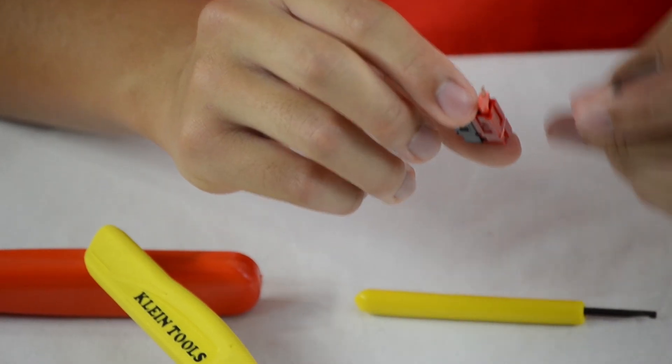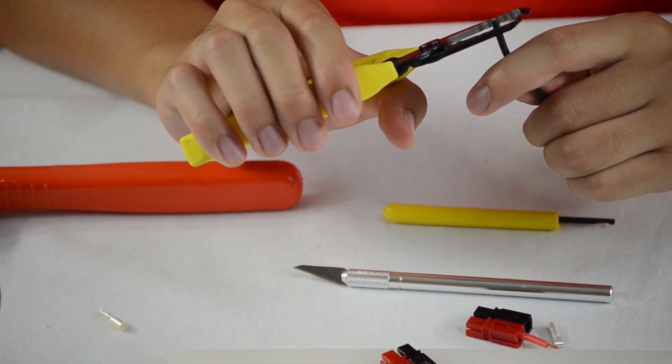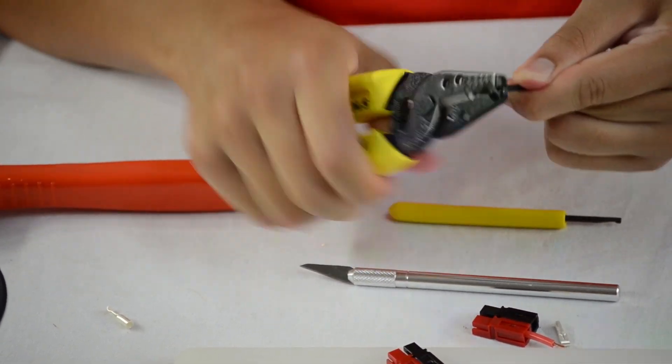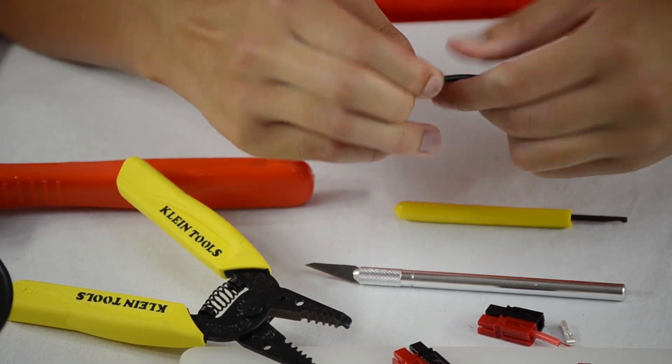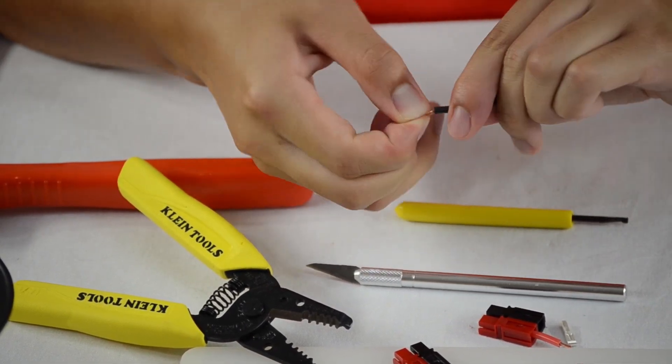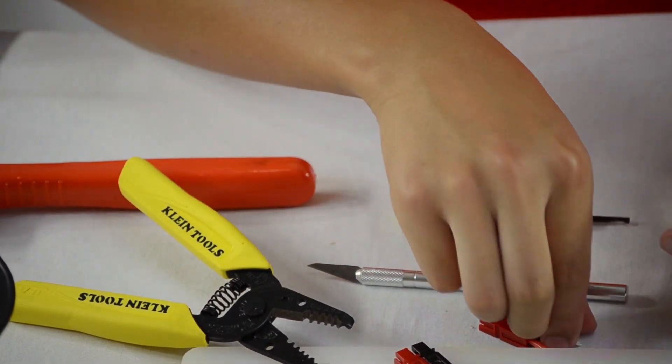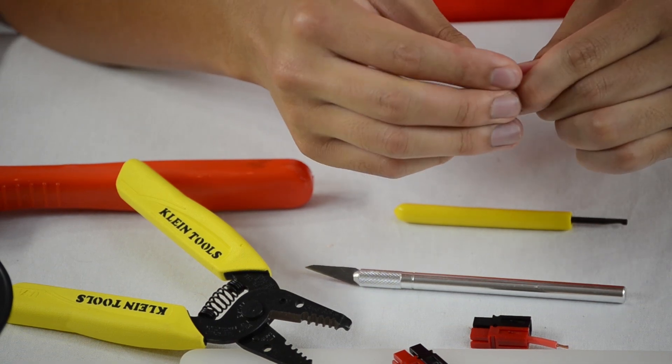Now, let's do the same thing for the black wire. So you're going to strip it again. Make sure that you twist it so that it can fit in the actual metal tip. Now, put the metal tip over it and just crimp it down.